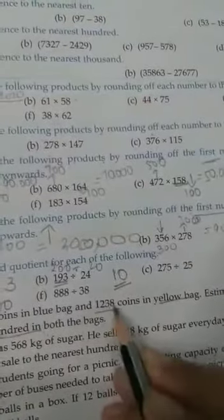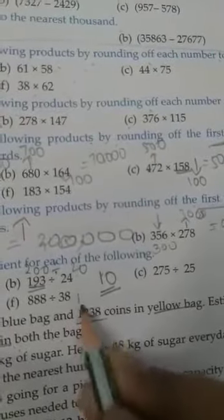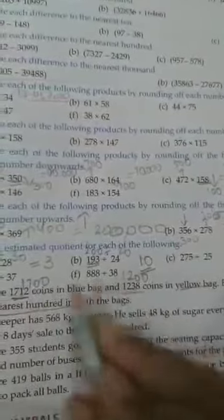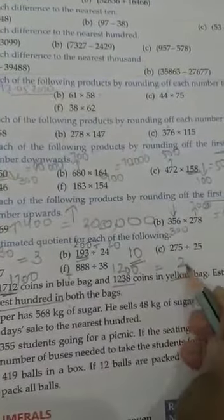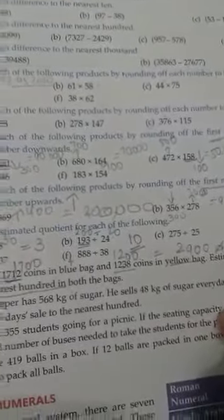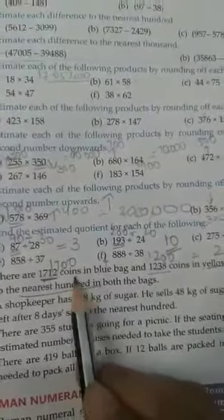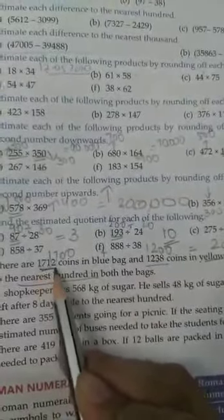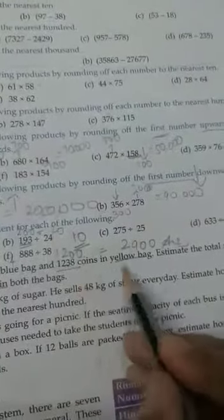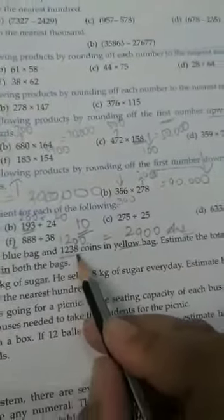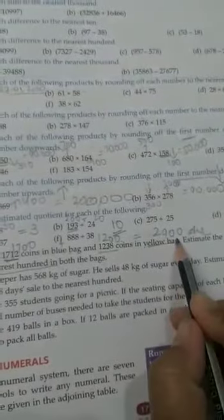For 1238 in the yellow bag, the tens digit is also less than 5, so it rounds to 1200. Now add both estimated values: 1700 plus 1200 equals 2900. Coins in blue bag: 1712, estimated 1700. Coins in yellow bag: 1238, estimated 1200. Estimated total number of coins equals 2900.